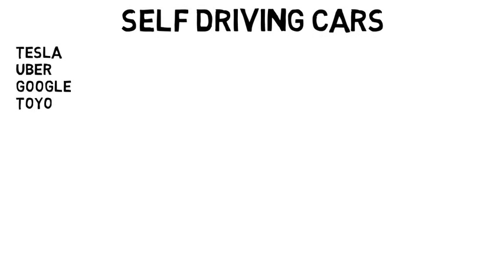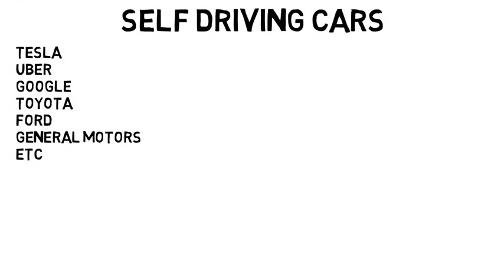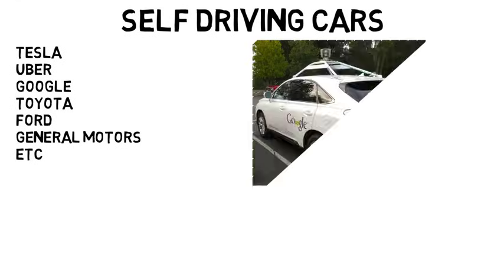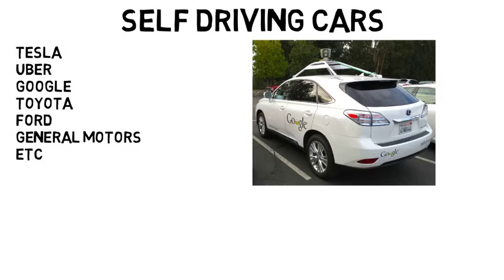A huge area of research you probably know of is self-driving cars. Companies like Tesla, Uber, Google, Toyota, Ford, General Motors, and more are all aiming to get self-driving cars out on the road. We do have self-driving cars right now, but there are restrictions, and we are still waiting for a fully autonomous vehicle available to consumers. Elon Musk has said we should have a self-driving car that can go from LA to New York completely on its own in the near future.